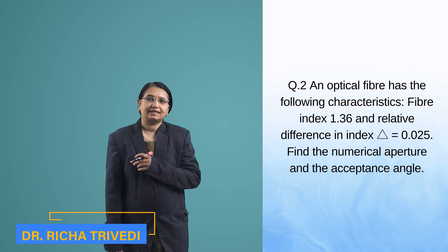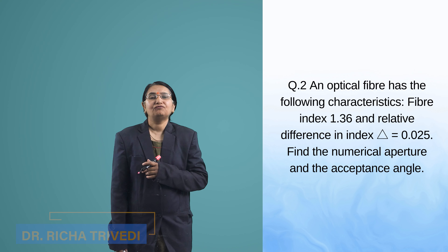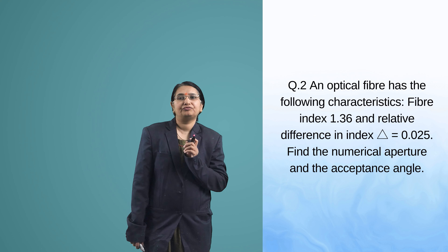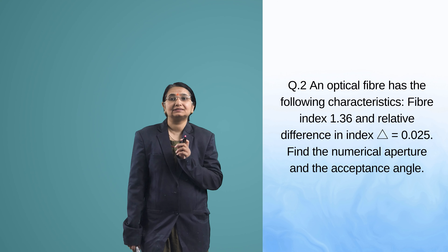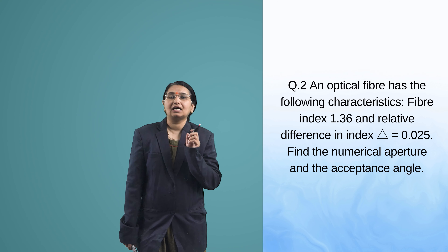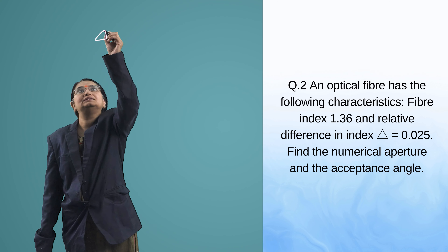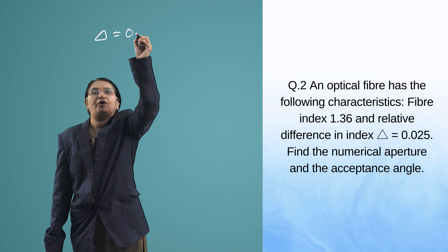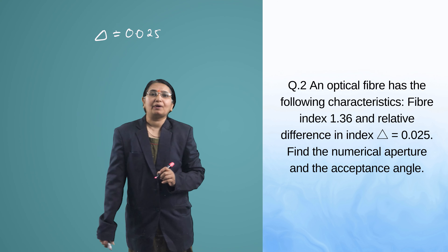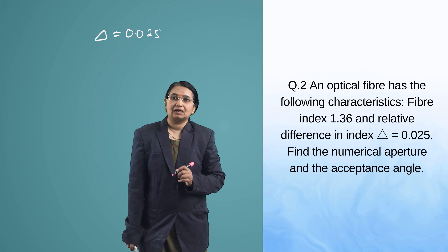Today we are doing optical fiber, based on some characteristics of optical fiber. Question number 2: an optical fiber has the following characteristics — fiber index is 1.36 and relative difference in refractive index, delta, is equal to 0.025. Find the numerical aperture and acceptance angle.